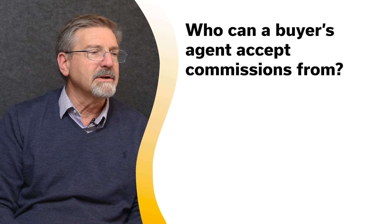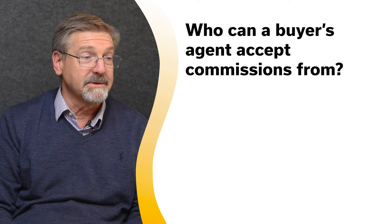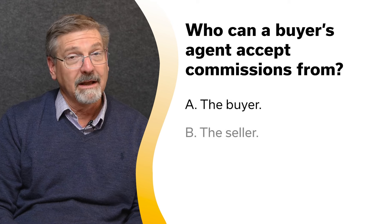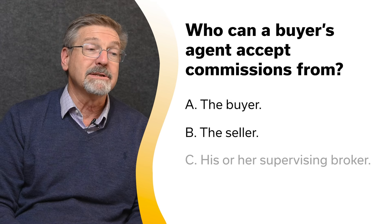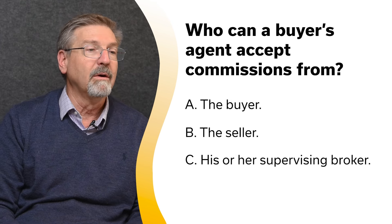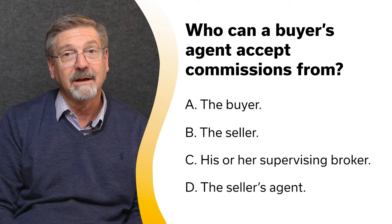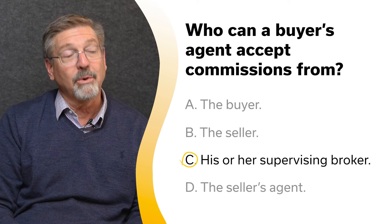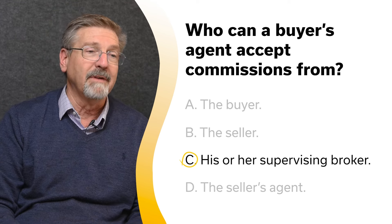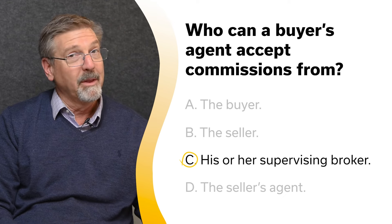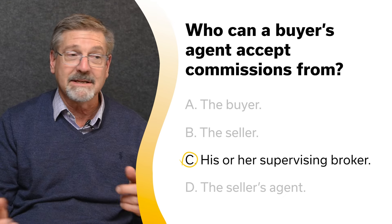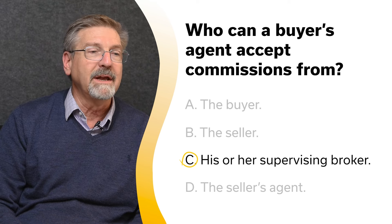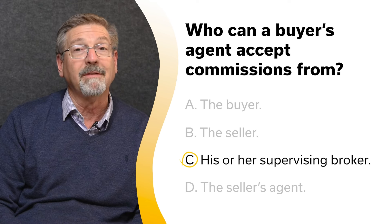Who can a buyer's agent accept commissions from? A. The buyer. B. The seller. C. His or her supervising broker. Or D. The seller's agent. The correct answer is C — his or her supervising broker. It's never the buyer or the seller. A buyer's agent, or any licensee, may only accept commission payments from their supervising broker.